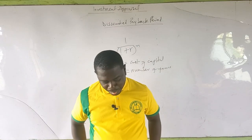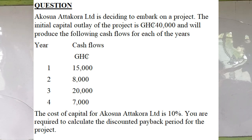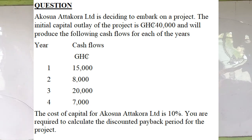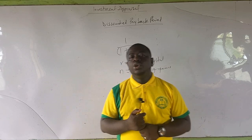Akosya Atakura Limited is deciding to embark on a project. The initial capital outlay is 40,000 Ghana cedis and will produce the following cash flows up to year 4: year 1 is 15,000; year 2 is 8,000; year 3 is 20,000; and year 4 is 7,000. The cost of capital for Akosya Atakura Limited is 10%. You are required to calculate the payback period of this project.